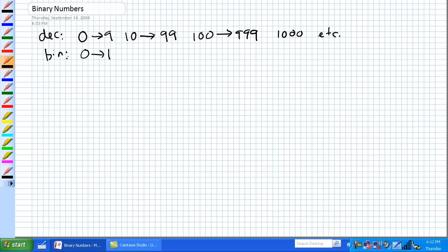Binary. Zero to one, that's easy. Now we have to add a second position - one, zero. Count up, one, one. Add another position, one, zero, zero. We're just basically adding a position any time we run out of digits.